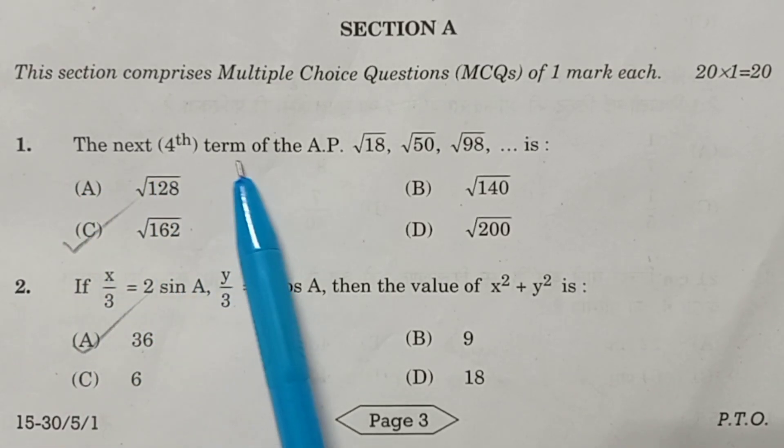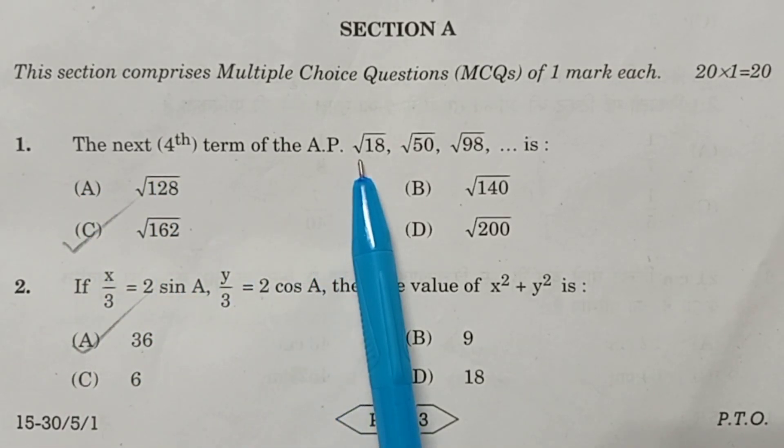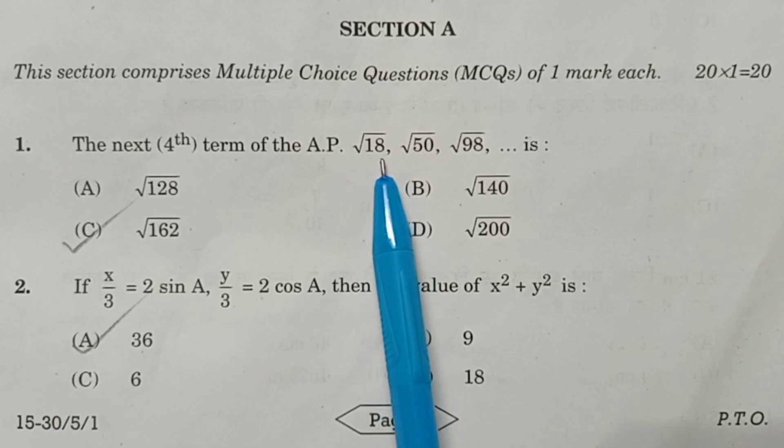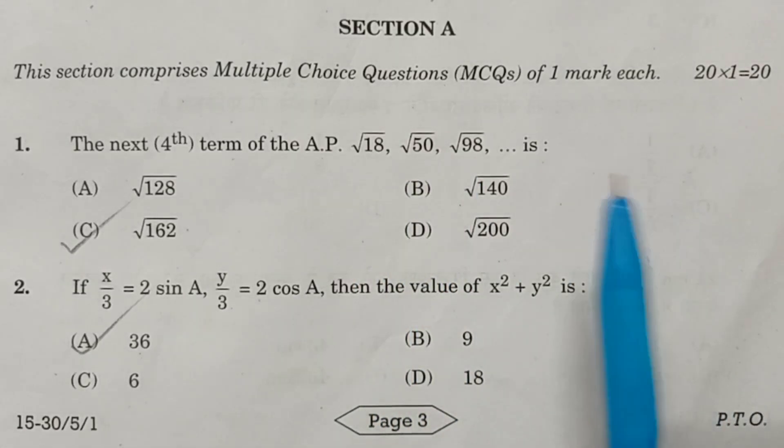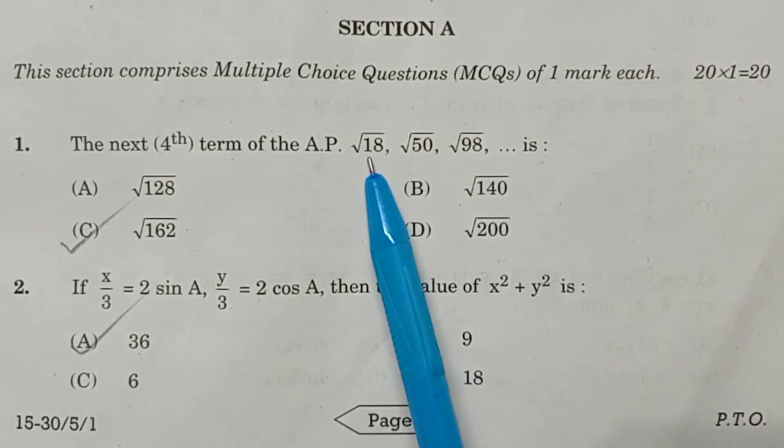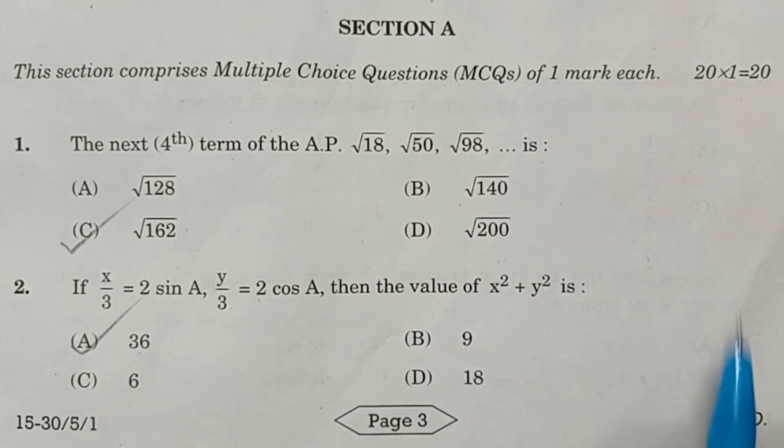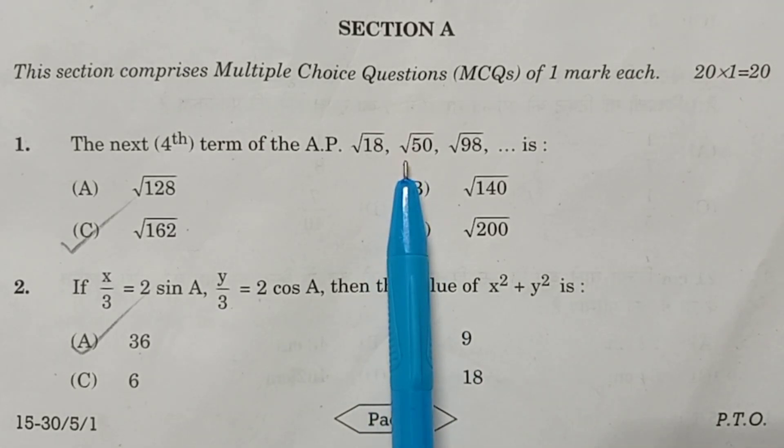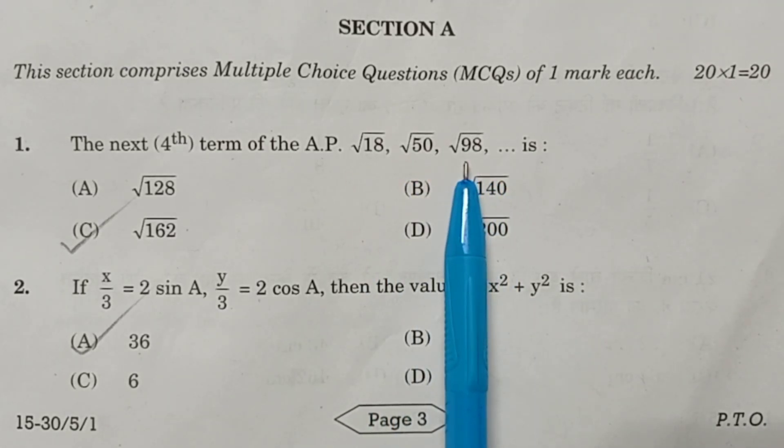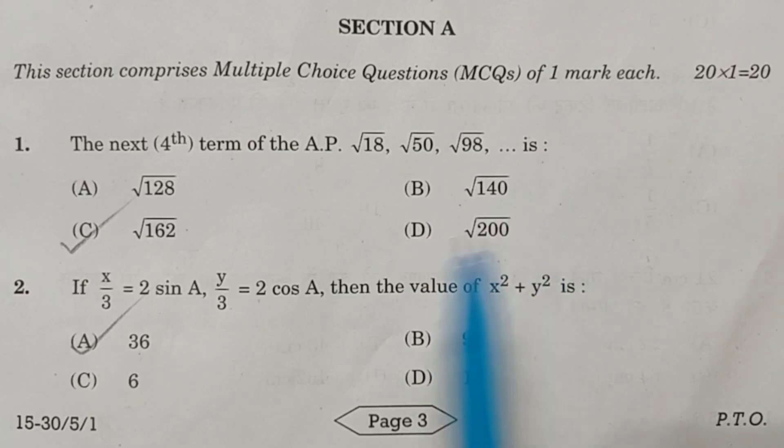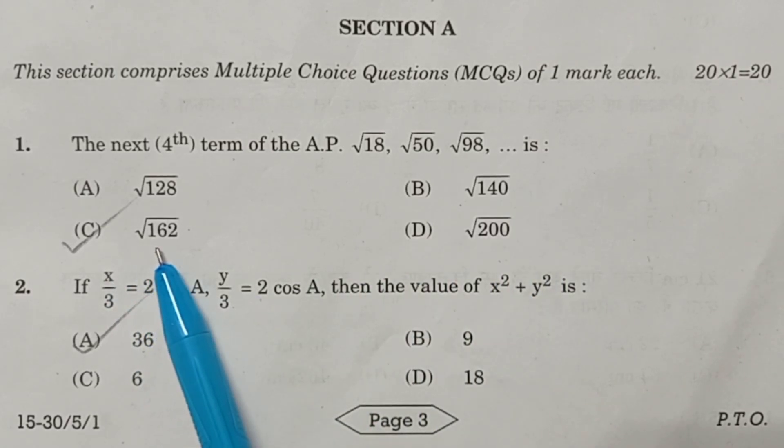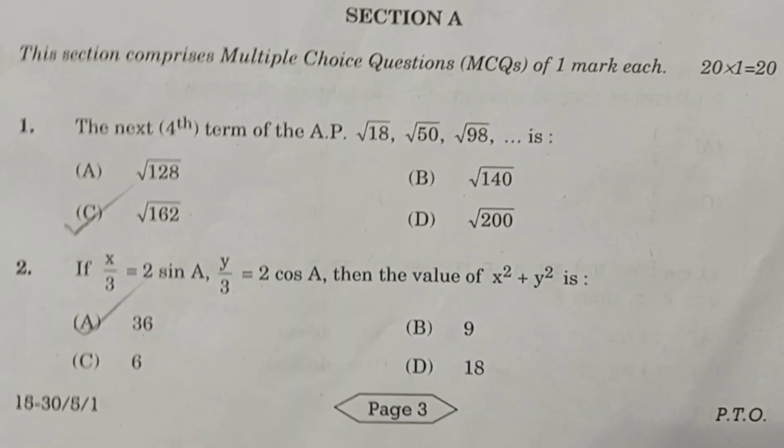First question. The next 4th term of an AP, root 18, root 50, root 98 is. Root 18 is 3 into root 2, and root 50 is 5 into root 2, 7 into root 2, therefore the next term is 9 into root 2, which is root of 162. The answer is C.